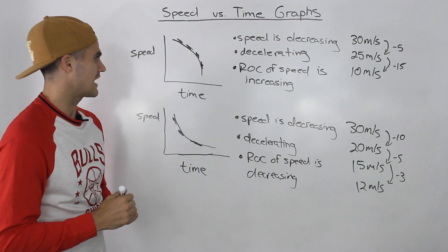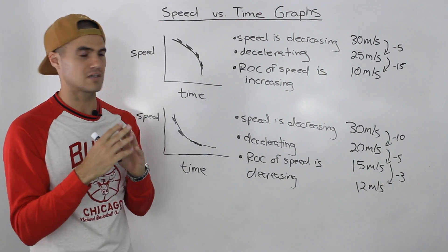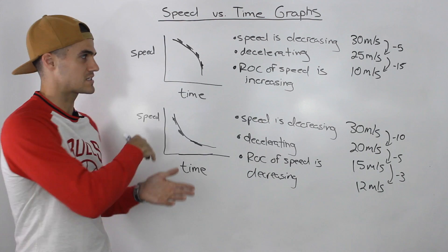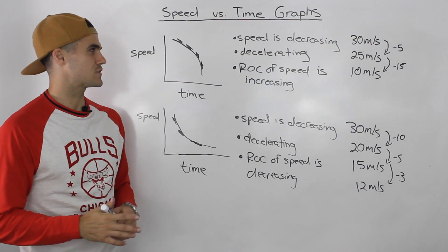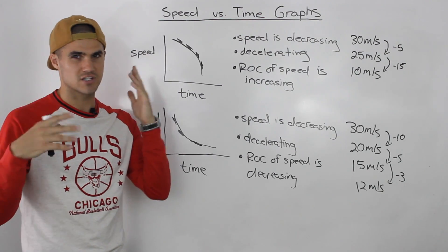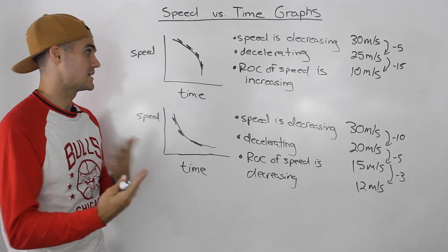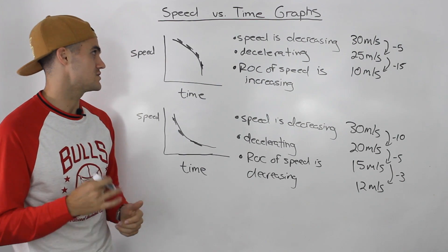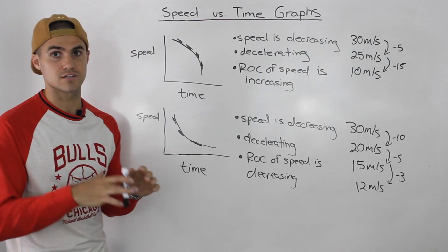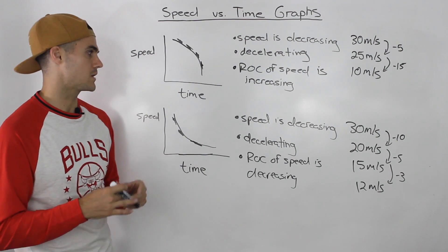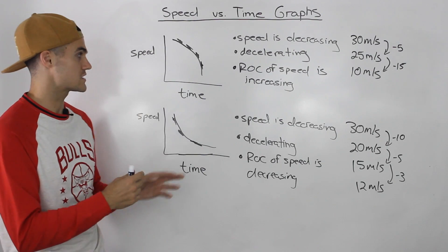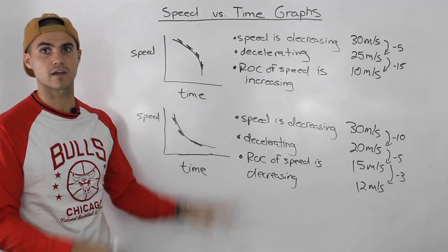Speed versus time graphs can be a little confusing. With displacement versus time graphs, the rate of change of displacement is just the speed, so the curves are more intuitive. But with speed versus time graphs, this rate of change involves acceleration, which can be tougher to get your head around. However, you do need to know speed versus time graphs — sometimes you'll be asked to describe them, sometimes to draw them. Make sure you understand the difference between displacement versus time graphs and speed versus time graphs: their different shapes and their respective descriptions.